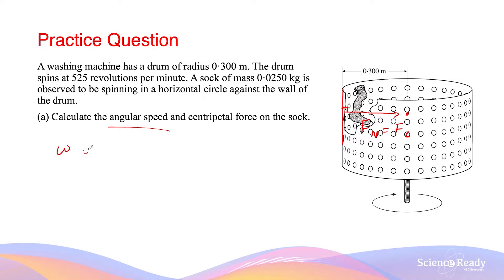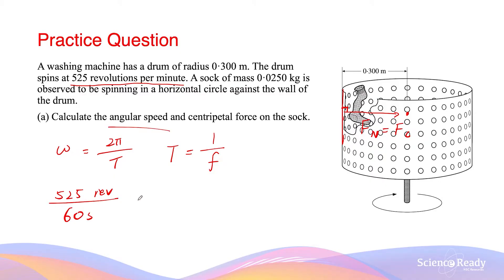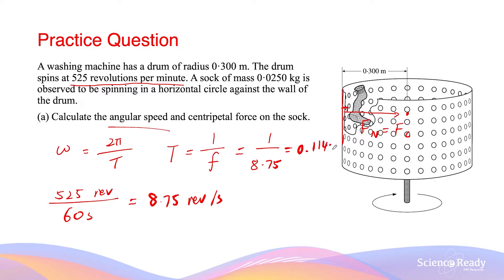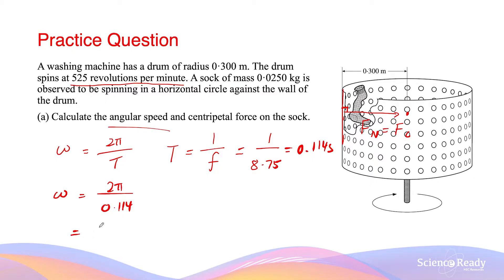For angular speed, omega equals 2π divided by the period of motion. The period can be calculated as 1 over the frequency. We calculate frequency from 525 revolutions per minute, which is 525 over 60 seconds, giving 8.75 revolutions per second. The period is therefore 1 over 8.75, which equals 0.114 seconds. So the angular speed omega equals 2π divided by 0.114, giving us 54.98 radians per second.